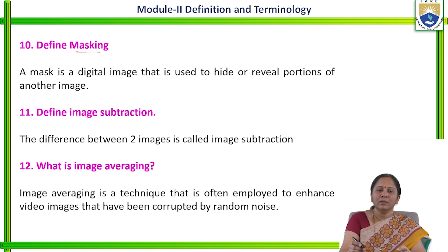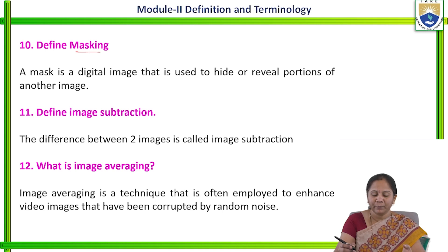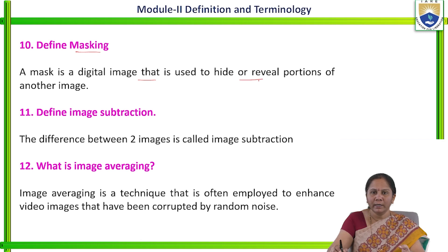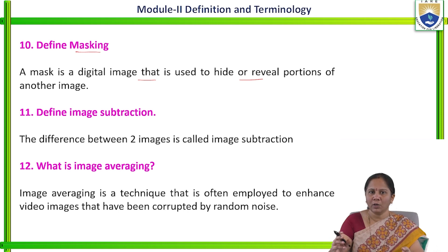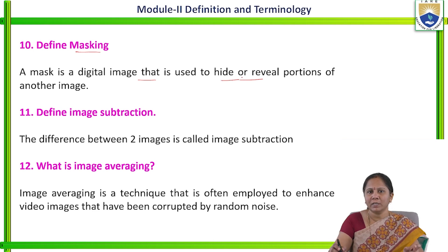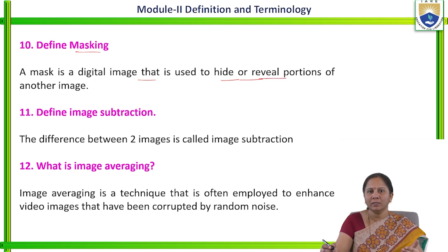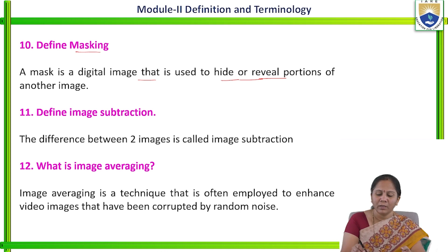Define masking, which is called filtering. A mask is a digital image which is used to hide or reveal the operations on another image. If we consider an image, this mask will be placed on the image, and the operation will be performed. Either it is used to hide that particular part of the image or it is used to reveal the portion of that particular image.